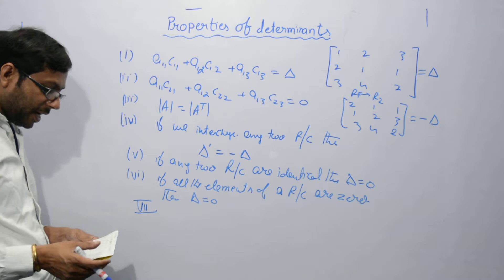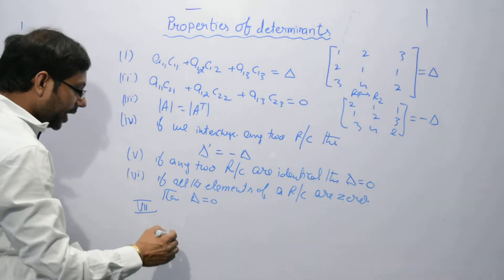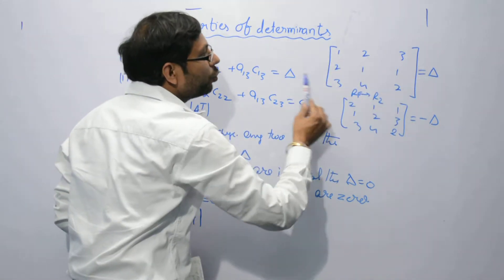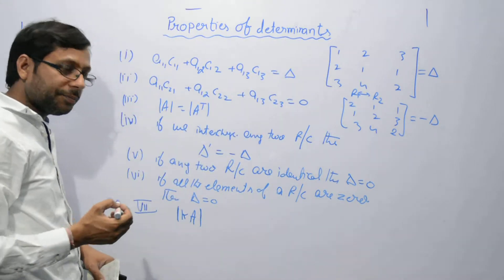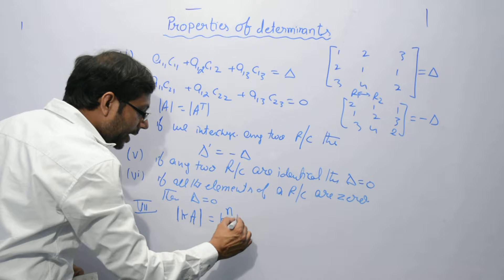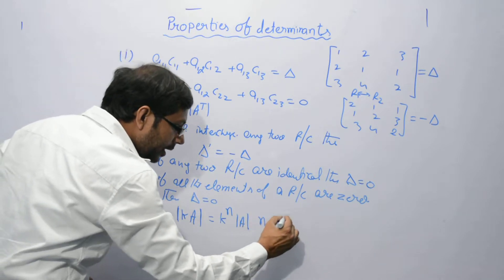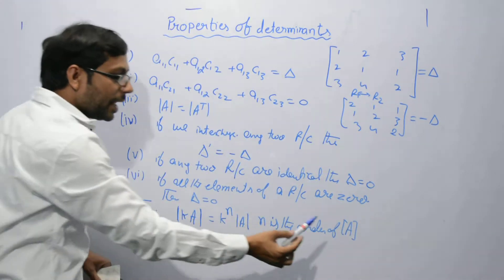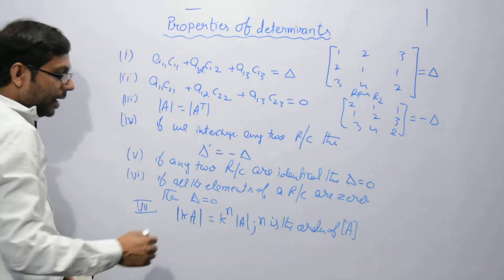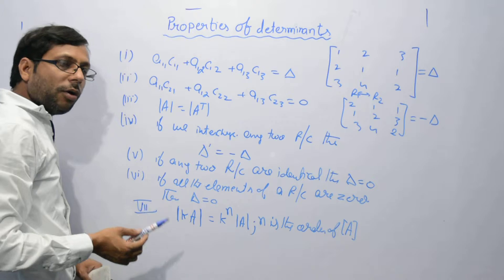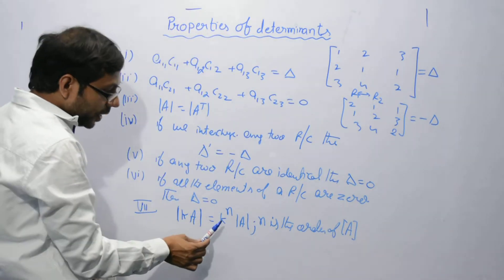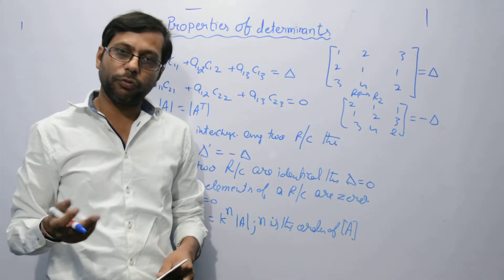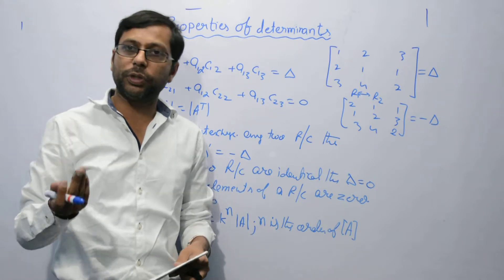The seventh property: if we have k times of A — that is, a new matrix which is k times the original matrix — what will the determinant be? That will be k raised to the power n into the determinant of A, where n is the order of matrix A. For example, if it is a 3x3 matrix and we multiply it by 2, then it is 2 raised to power 3, which is 8 — so the new determinant will be 8 times the old one.